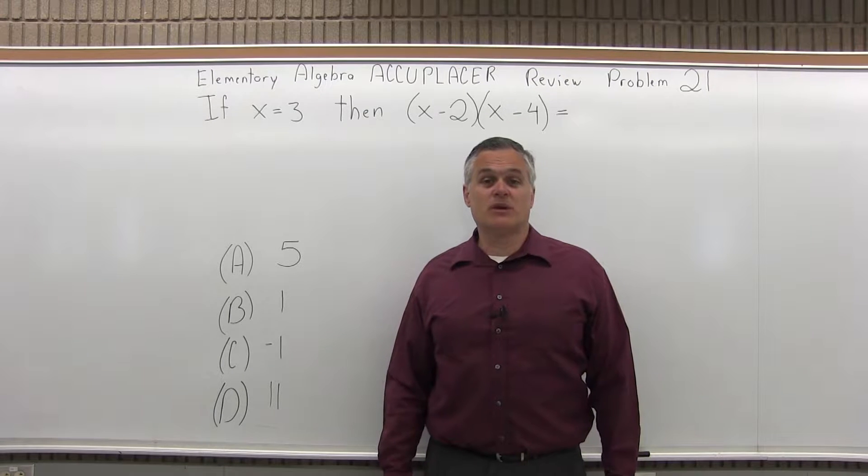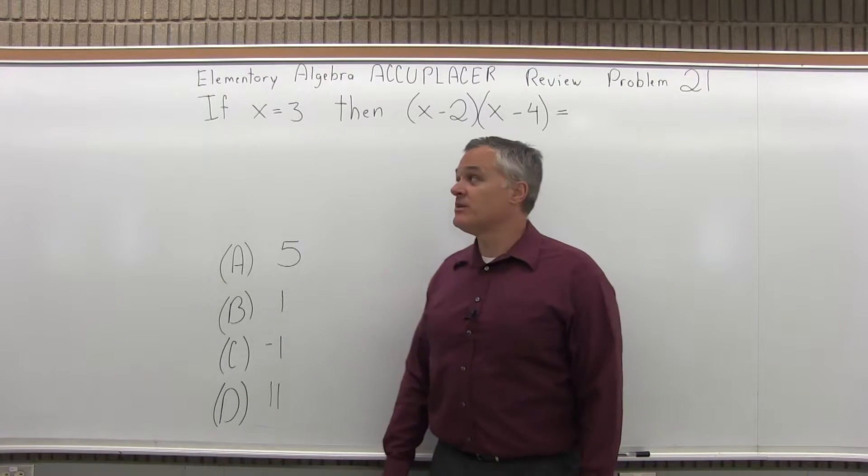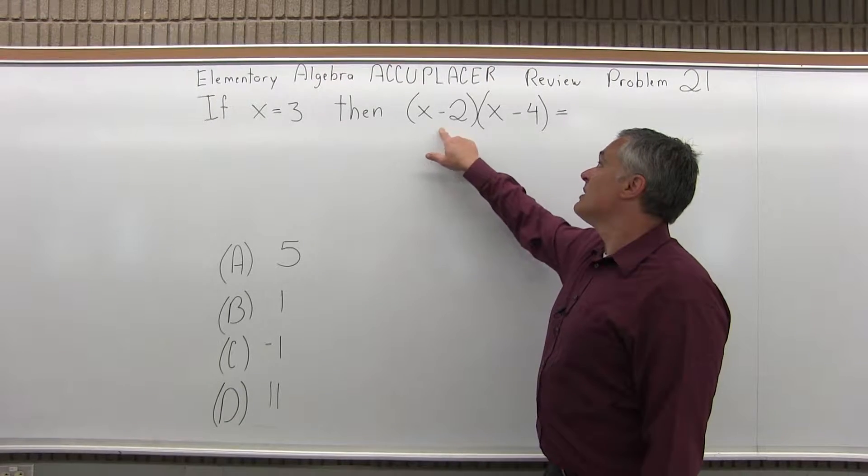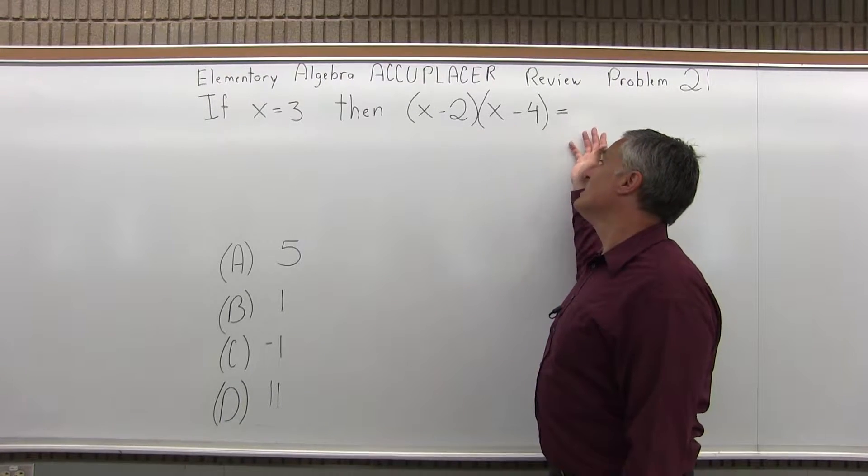This is the Elementary Algebra Accuplacer Review, Problem number 21. It says if x is 3, then x minus 2 times x minus 4 equals what?